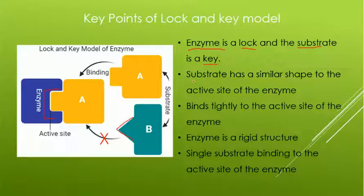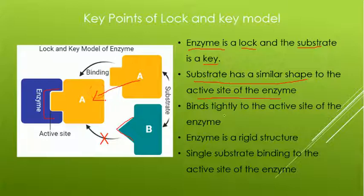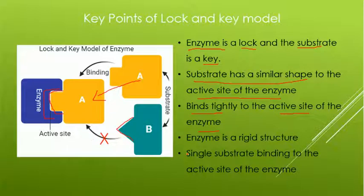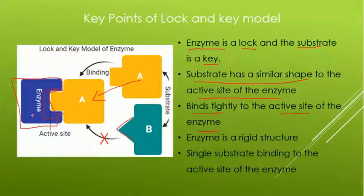The substrate has a similar shape to the active site of the enzyme, which is why a substrate binds with the enzyme. The third point is that the substrate binds tightly to the active site of the enzyme — it is properly and tightly fitted. The enzyme is a rigid structure; it is not going to change its shape, just like a lock. Single substrate binding to the active site of the enzyme can be explained by the Lock and Key model.